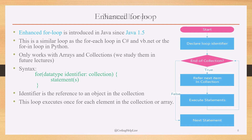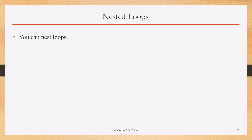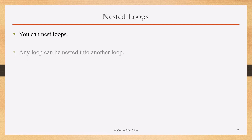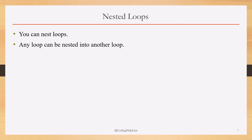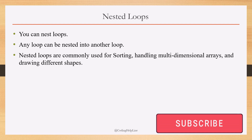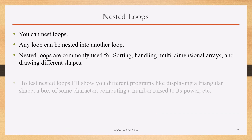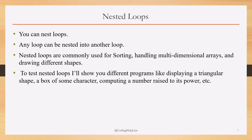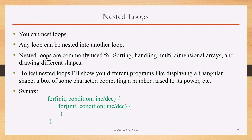Now, nested for loops. We can nest loops — a loop within a loop. Any loop can be nested into another loop. We can nest a for loop into a while loop, a while loop into a for loop, and similarly with do-while. Nested loops are commonly used for sorting, handling multi-dimensional arrays, drawing different shapes, and processing other mathematical logics. To demonstrate, I will show programs like displaying a triangular shape, a box of characters, computing a number raised to its power, and other practice programs.